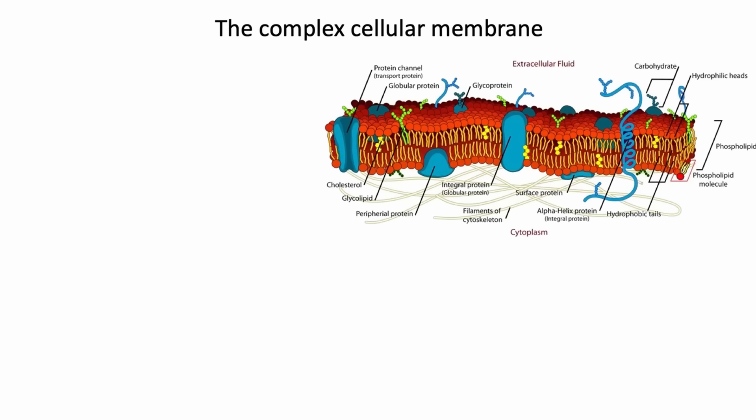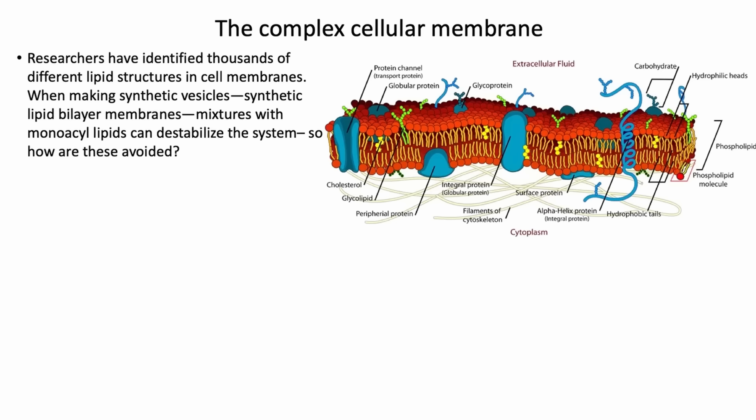So, the complex cellular membrane. This is actually what the membrane of a cell looks like when it's made really simple in cartoon form. Researchers have identified thousands — actually 40,000 different lipids now have been identified in cell membranes. Not just one.